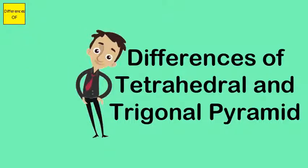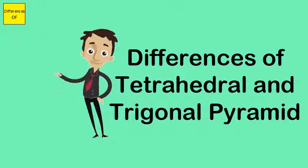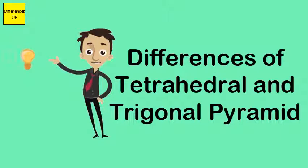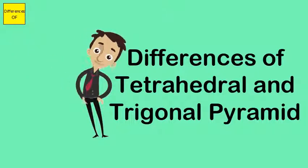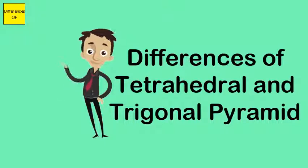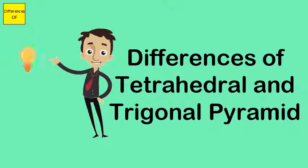In a tetrahedral pyramid, since all the atoms are similar to each other, the electric attraction between them is nullified. In a trigonal pyramid, the lone atom makes the electric attraction between the three atoms at the corners of the pyramidal structure possible.